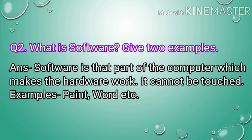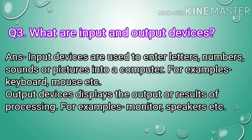Question number 2: What is software? Give two examples. Answer. Software is that part of the computer which makes the hardware work. It cannot be touched. Examples: Paint, Word, etc.